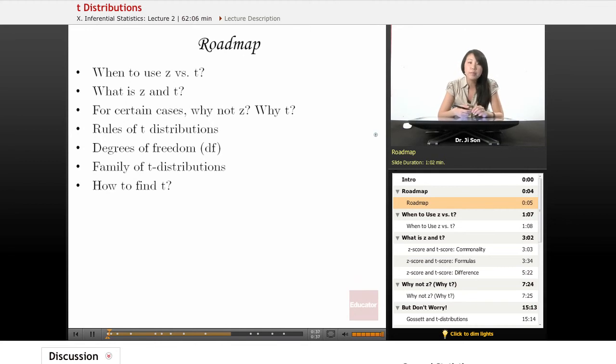We're going to talk about rules of T distributions. They follow certain patterns. T distributions are a family of distributions separated by degrees of freedom. So different T distributions have different degrees of freedom. We're going to talk about what is degrees of freedom and how degrees of freedom relates to that family of T distributions. And then finally, summarize how to find T.